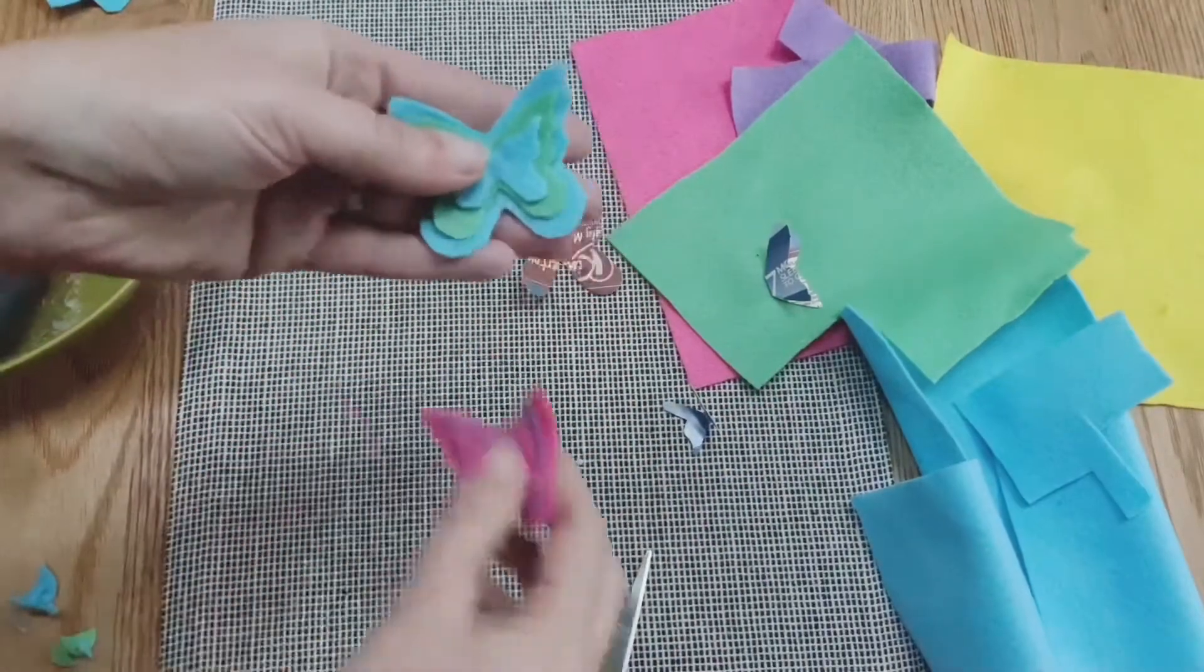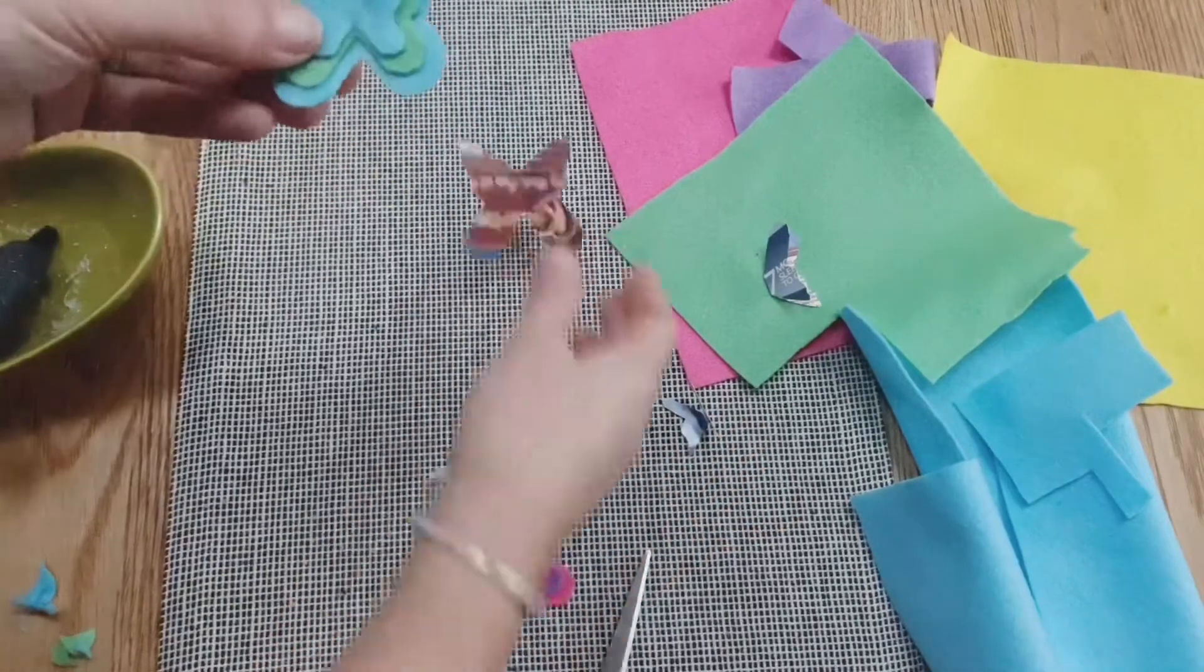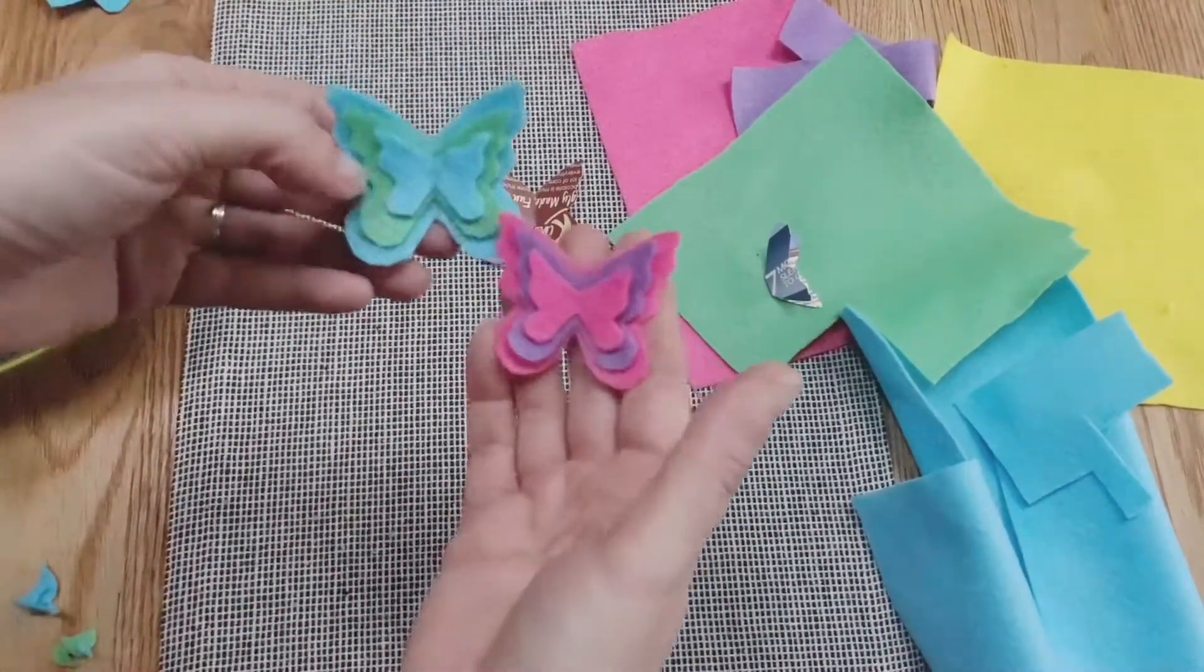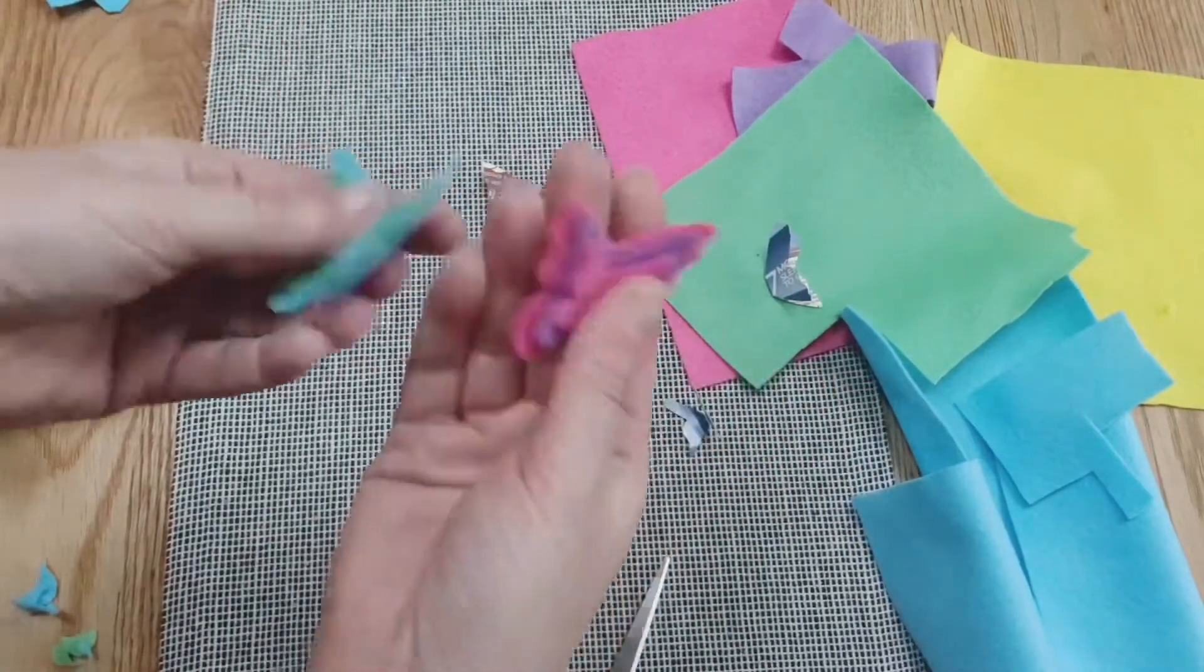There we go. All I've done there is slightly trimmed off the bottom of the wings because these ones are slightly long. Once I put it together they look a little bit out of proportion. So on both of these I've trimmed off the bottom slightly, just to make it a little bit more butterfly shape and more in proportion. And that's your felt butterflies.